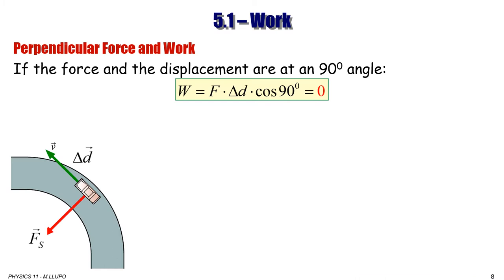The force of kinetic friction can sometimes be perpendicular to the displacement of an object. For example, the static friction force applied on the tires of a car undergoing circular motion is perpendicular to the car's velocity, so the work done by static friction on the car equals zero — because cosine 90° = 0, and zero multiplied by any number gives zero.